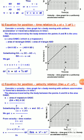Substituting OA equal to u, BC equal to v, and OC equal to t, we get s equals u plus v times t divided by 2. From the velocity-time relation, t equals v minus u divided by a. So s equals v plus u times v minus u divided by 2a, or 2as equals v squared minus u squared. This is the velocity-time graph for uniform acceleration motion.